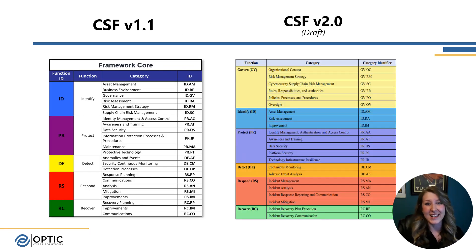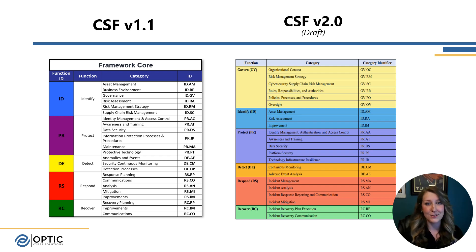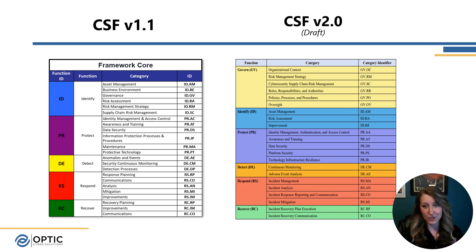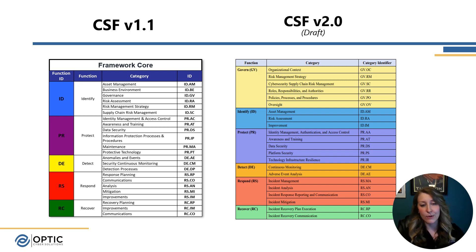Now to get into the nitty gritty, we've got again the side-by-side here of the categories for the cybersecurity framework. We can see on the left the CSF 1.1, and on the right we've got CSF 2.0, the draft that's out today. I wanted to walk through here and do kind of a left and right comparison, similar to how I did back in April with the discussion draft, and talk about what's been added, what's been removed, and how it's all been reshuffled around.